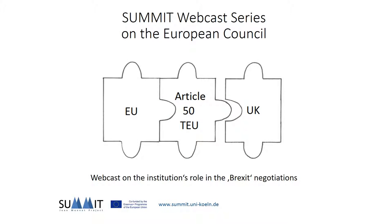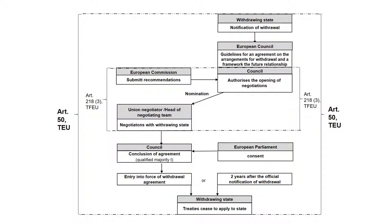Welcome to the Summit Webcast Series on the European Council — a webcast on the institution's role in the Brexit negotiations. The official process of withdrawal is only triggered when the state that seeks to leave the EU officially notifies its intention to the European Council. This notification starts a two-year period after which the EU treaties cease to apply to the country.